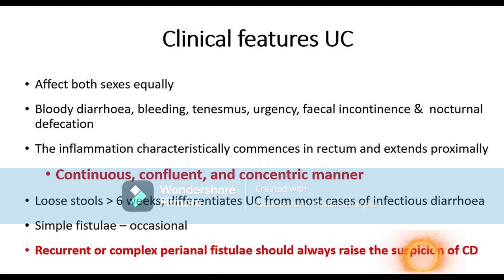Ulcerative colitis affects both males and females equally — there is no gender distinction. The usual presentation includes bloody diarrhea, bleeding, tenesmus, urgency, faecal incontinence, and nocturnal defecation. Nocturnal defecation is the symptom that differentiates UC from irritable bowel syndrome, as IBS generally has no nocturnal symptoms. Inflammation characteristically commences in the rectum and extends proximally. The three C's for UC to remember are: continuous, confluent, and concentric — these are pathognomonic features.